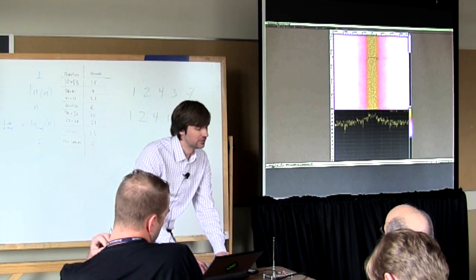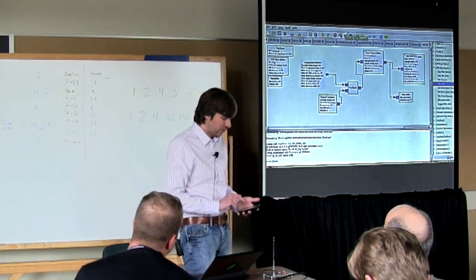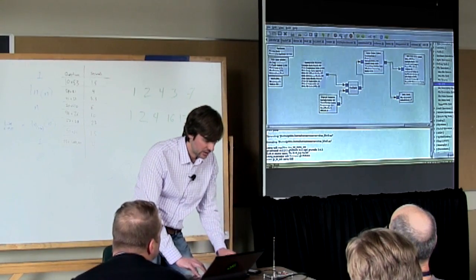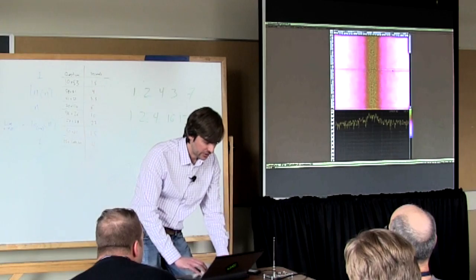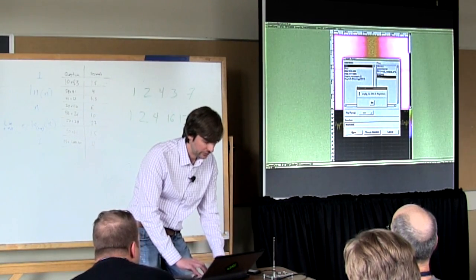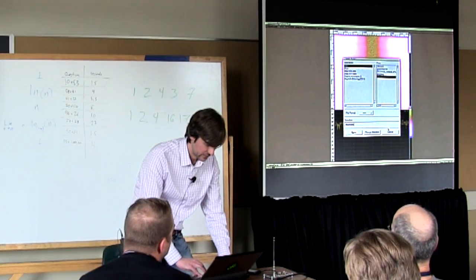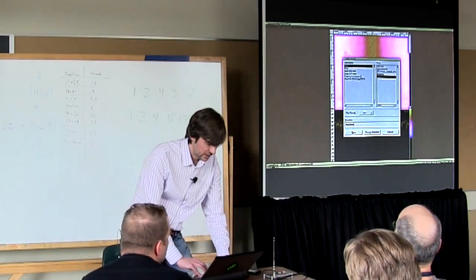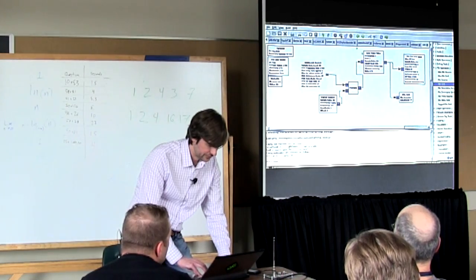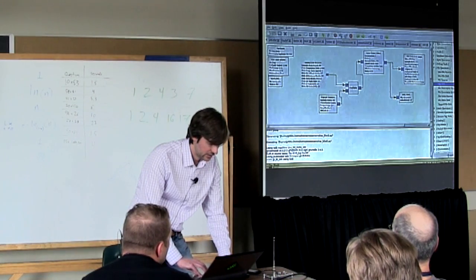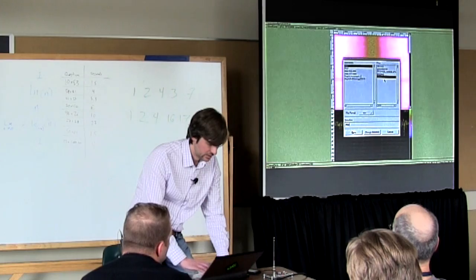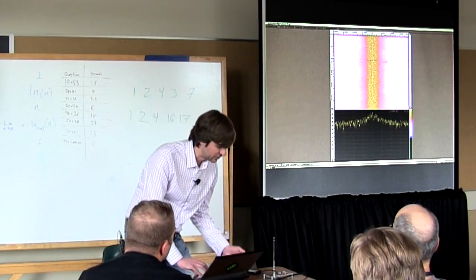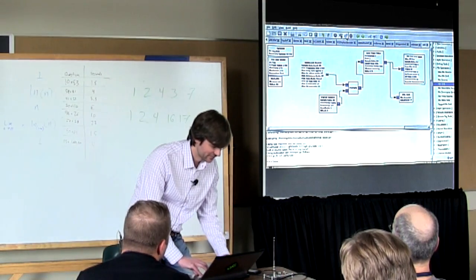Basically all we're seeing is just this filtered noise. Now let's try to add a signal to that noise. Let's go run the flow graph again, with my phone scanning for Bluetooth devices. And I'll just run this for a second.